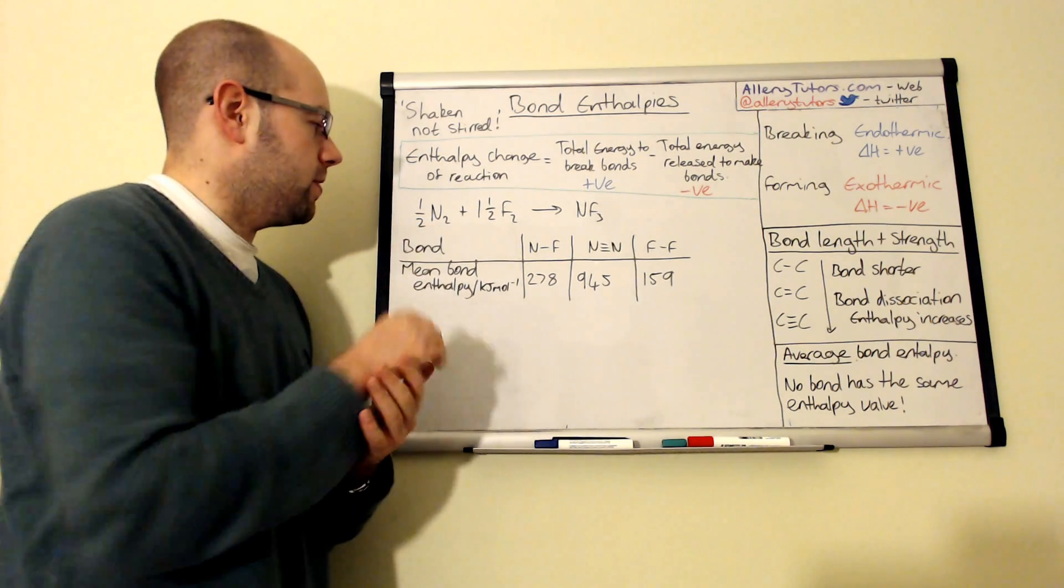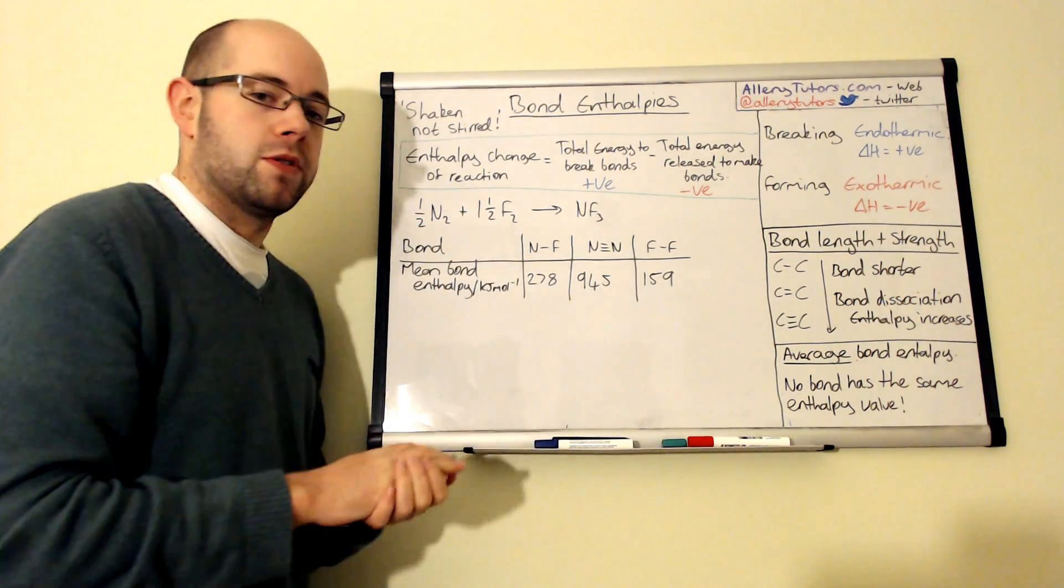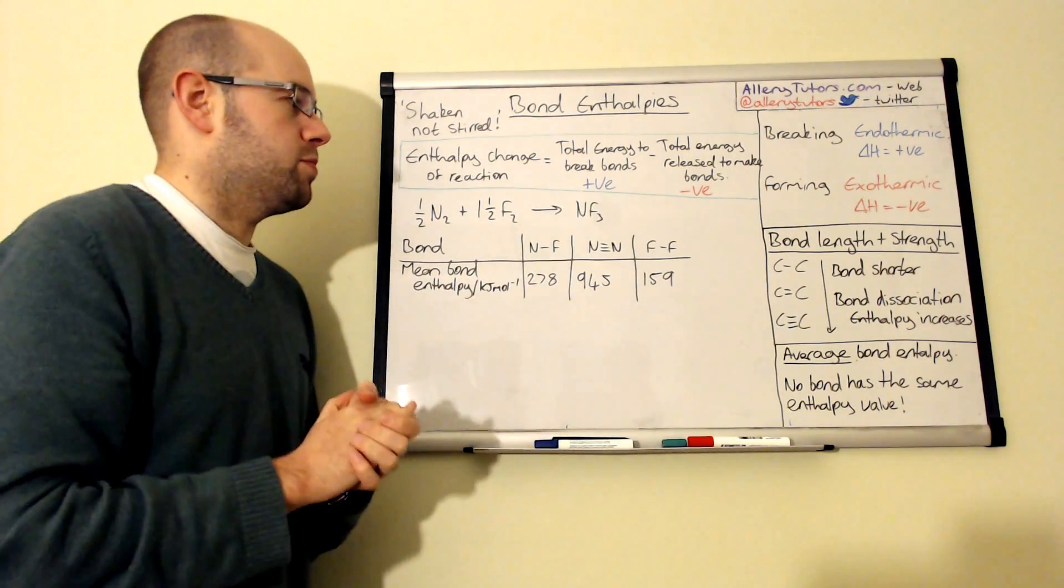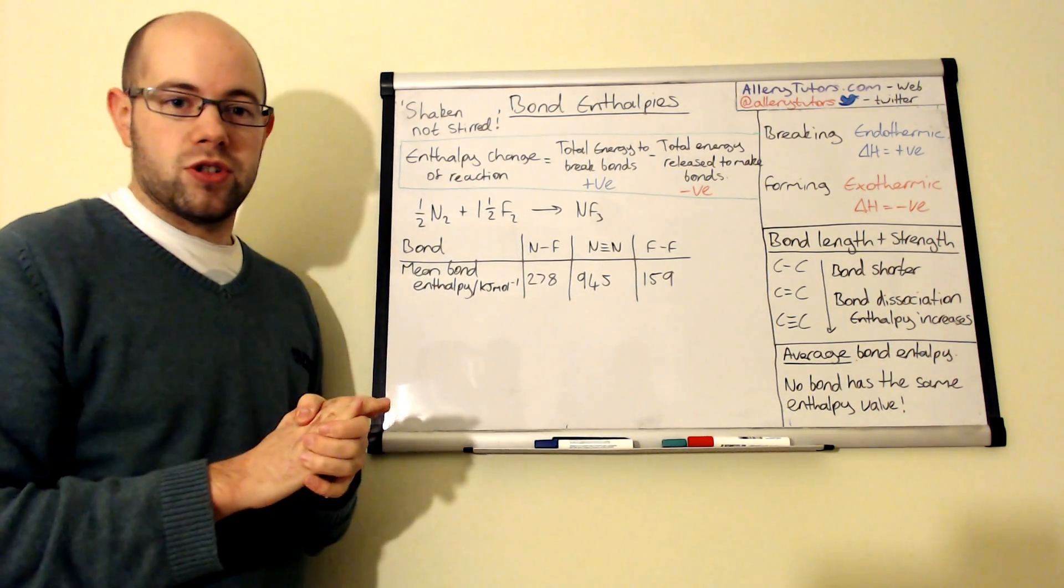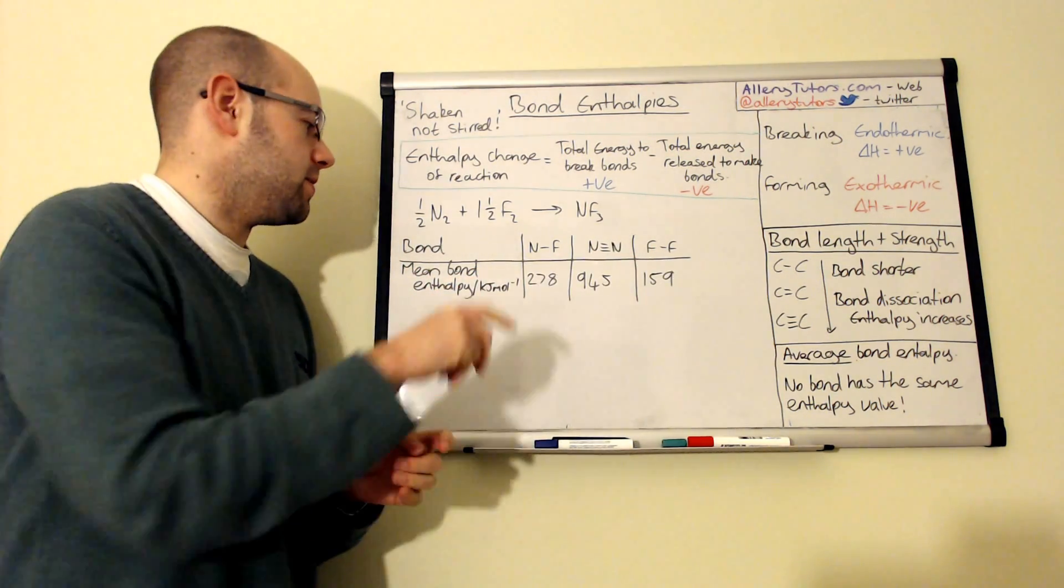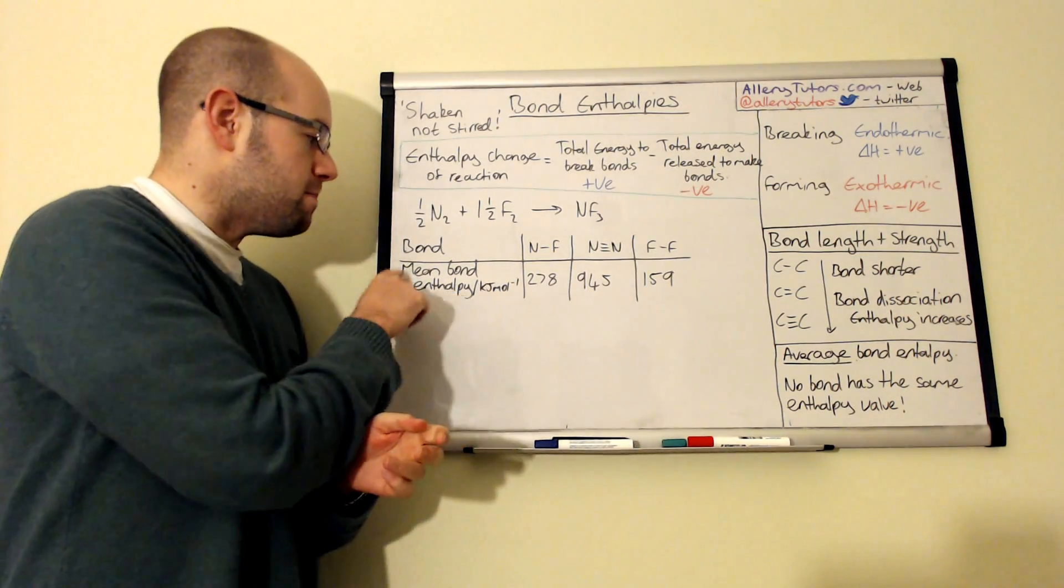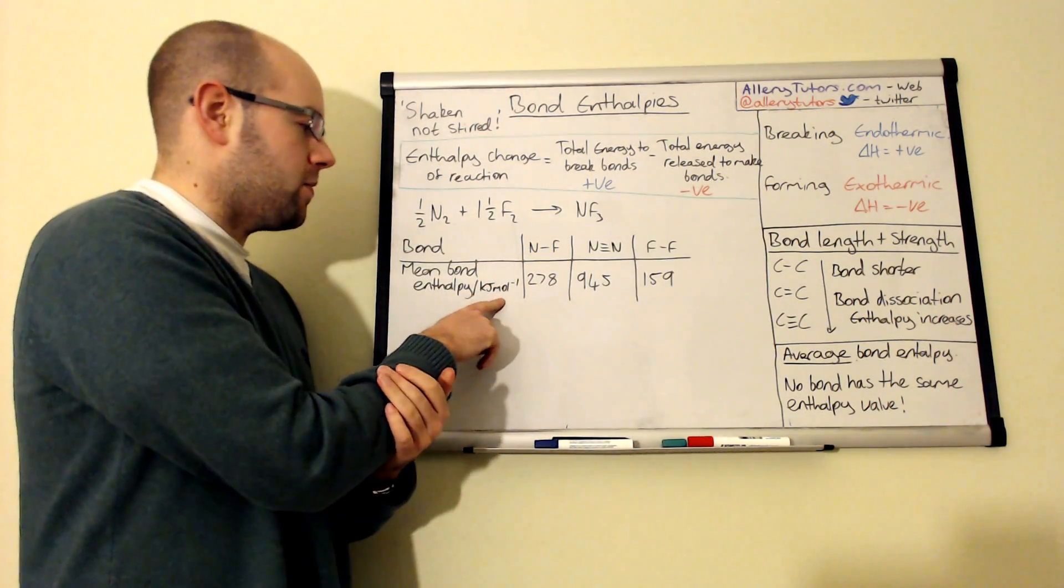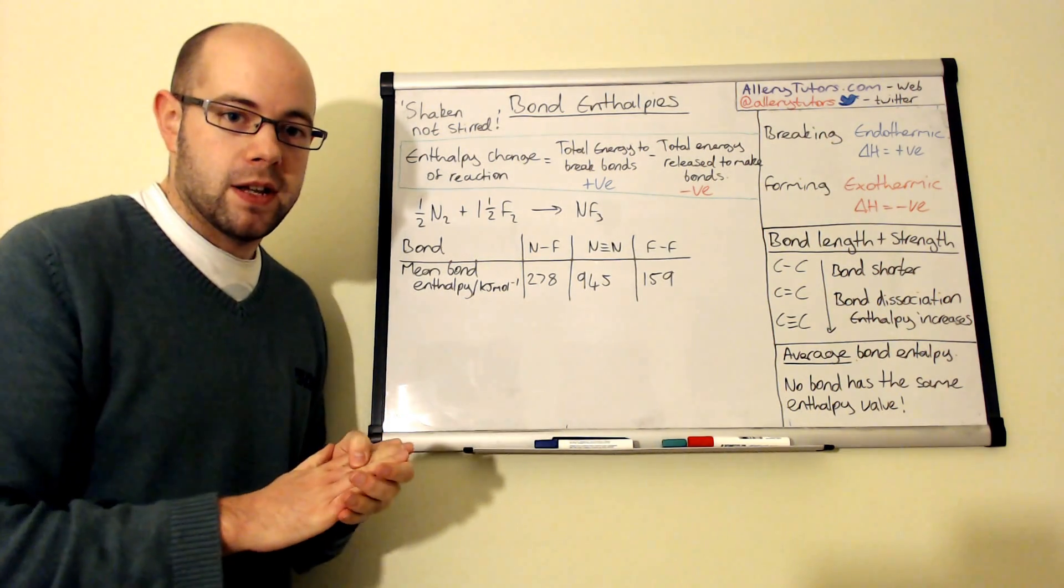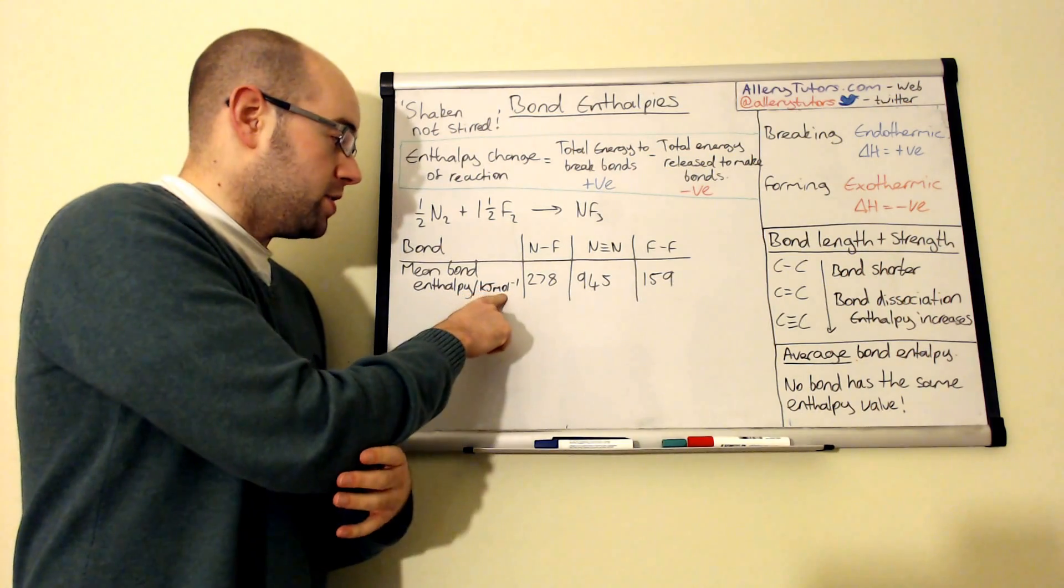So we have half moles of N2, which is nitrogen, and one and a half moles of fluorine, and that will produce one mole of nitrogen trifluoride. Now what you've been given is a set of data, and you can see here that these are the different bond enthalpies. Now this is the mean bond enthalpy, so this is the amount of energy that's either needed to break the bonds or given out when the bonds are formed.